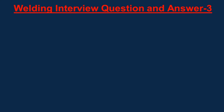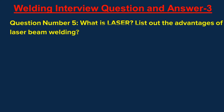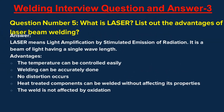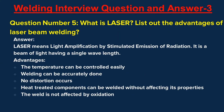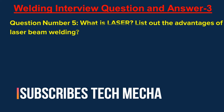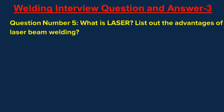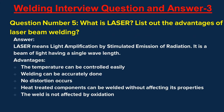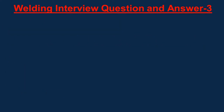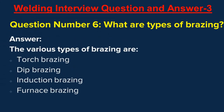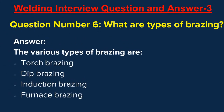Question number five: What is laser welding? Answer: A laser is a beam of light having a single wavelength. Advantages: the temperature can be controlled easily, welding can be accurately done, no distortion occurs, heat-treated components can be welded without affecting their properties, and the weld is not affected by oxidation. Question number six: What are the types of brazing? Answer: The various types of brazing are torch brazing, dip brazing, induction brazing, and furnace brazing.